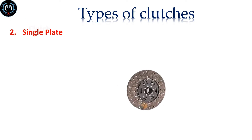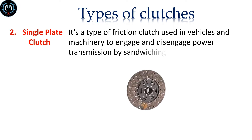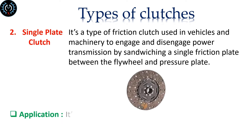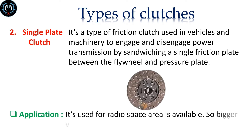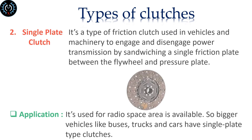Single plate clutch. It's a type of friction clutch used in vehicles and machinery to engage and disengage power transmission by sandwiching a single friction plate between the flywheel and pressure plate. It is used where radio space area is available, so bigger vehicles like buses, trucks and cars have single plate clutches.